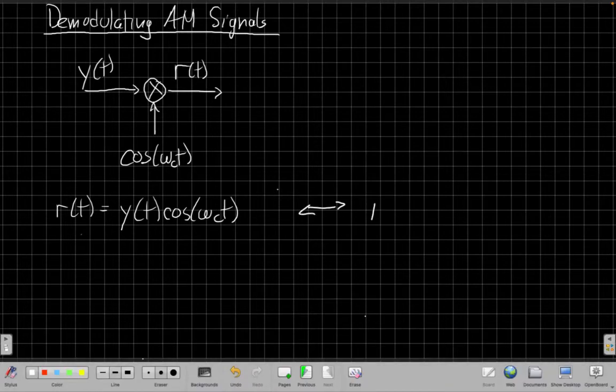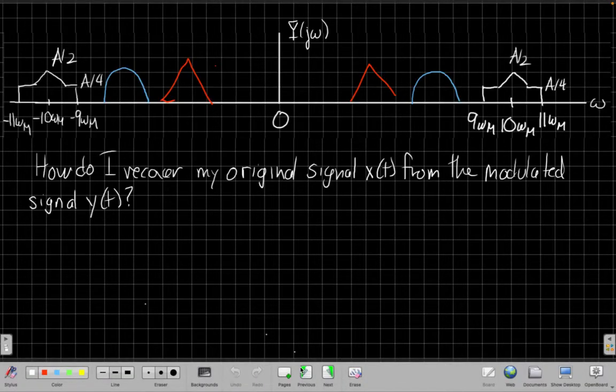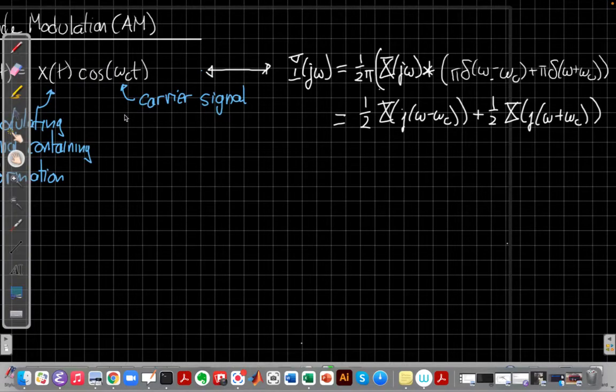Right, this is the output of this multiplier, or modulator was y of t times cosine omega c of t. Well, that's the same thing we did to make the modulator, so we know what's going on in frequency. When I go say, well, what's r of j omega going to look like? It's the same thing we had earlier. Right, so just the same way that this multiplication in time is convolution with the frequency, we get the same thing back we had a minute ago, just using new variables.